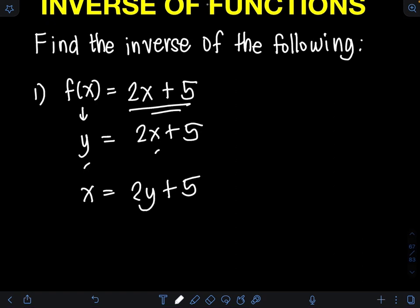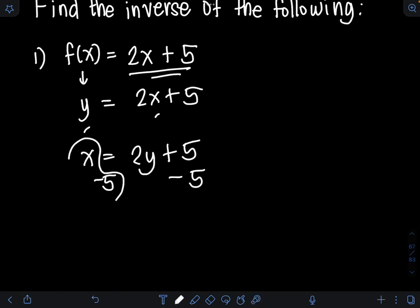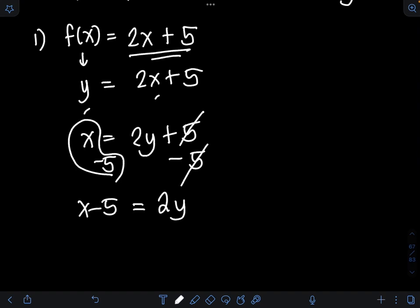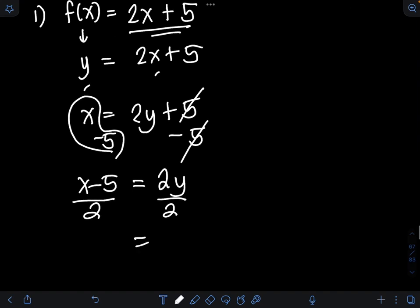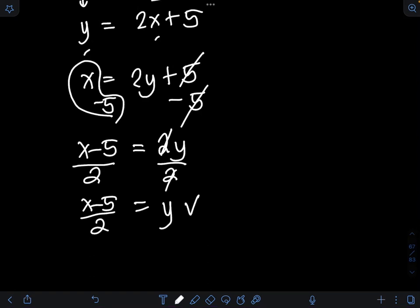Then we need to solve this new equation for y explicitly in terms of x by manipulating the equation algebraically. I can isolate y by subtracting 5 from both sides of the equation, so I will have x minus 5 equal to 2y. Then I can solve for y by dividing both sides by its coefficient 2, giving y equal to x minus 5 over 2.